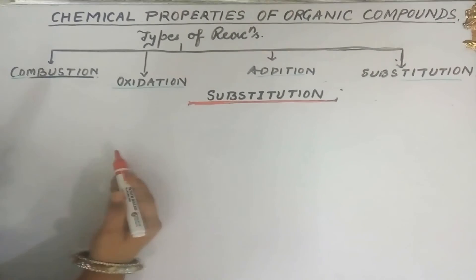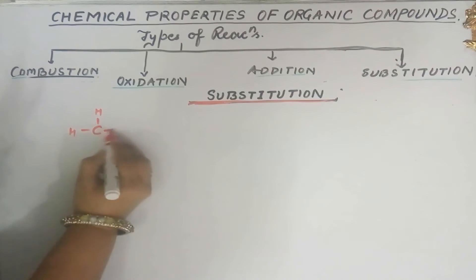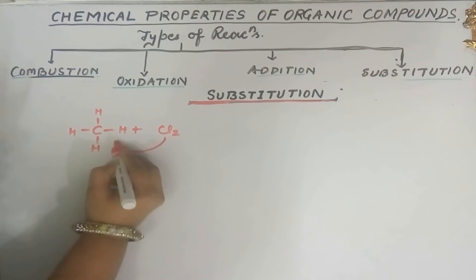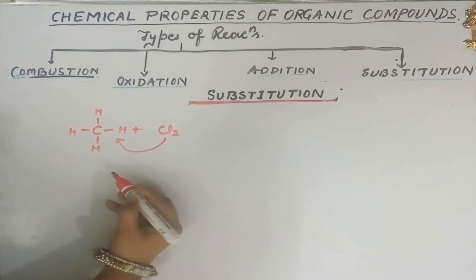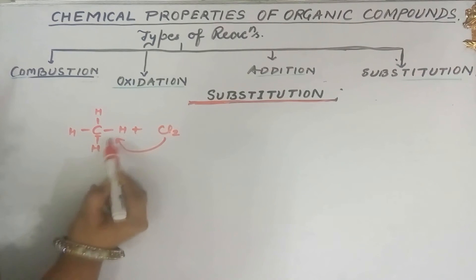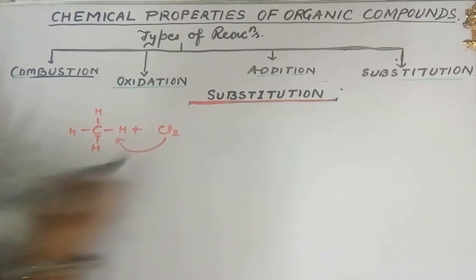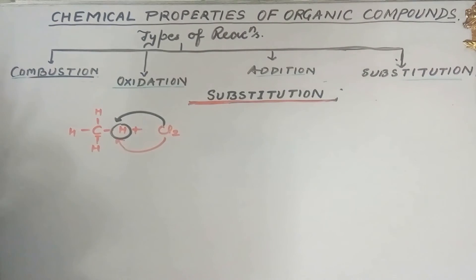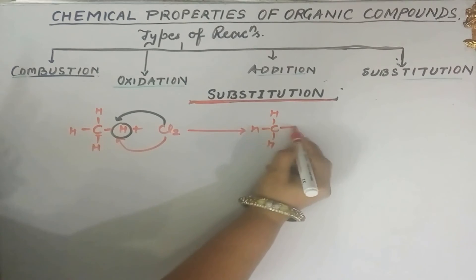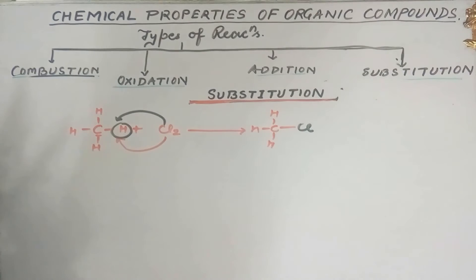Next is the substitution reaction, which is simple but also very important. Taking the simplest alkane — methane — if I want to add a chlorine atom to it, it is not possible because the carbon is already attached to four hydrogen atoms and is completely satisfied. So methane cannot undergo addition reaction. What I can do is remove a hydrogen and then add chlorine — that is what happens in a substitution reaction, where one atom is removed and another atom or group takes its place.